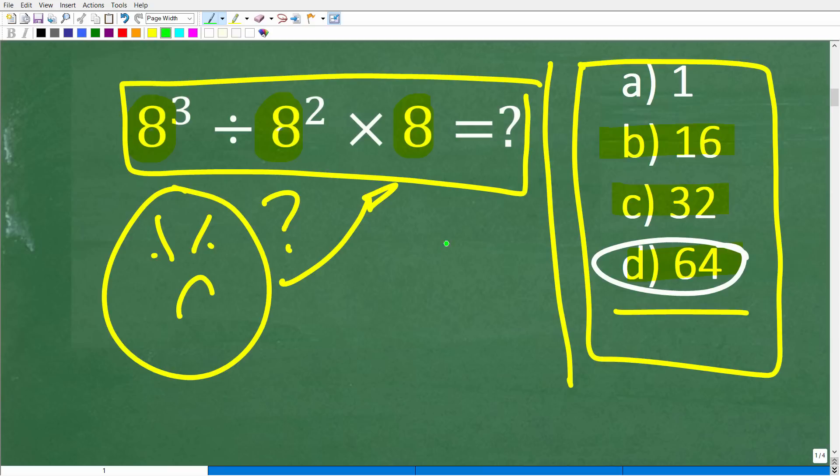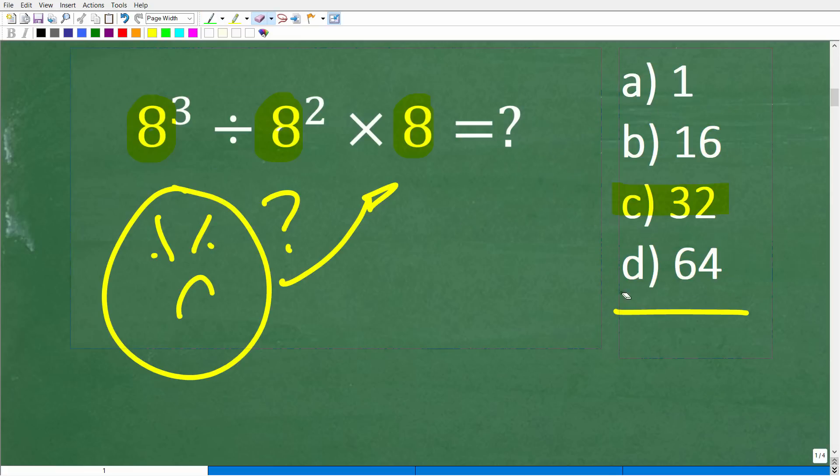But a lot of you probably got the answer of 1. Now, 1 is actually a very logical answer, but it is wrong. Now, if you got this answer, I'm happy that you found this video because you are making a very common math mistake.